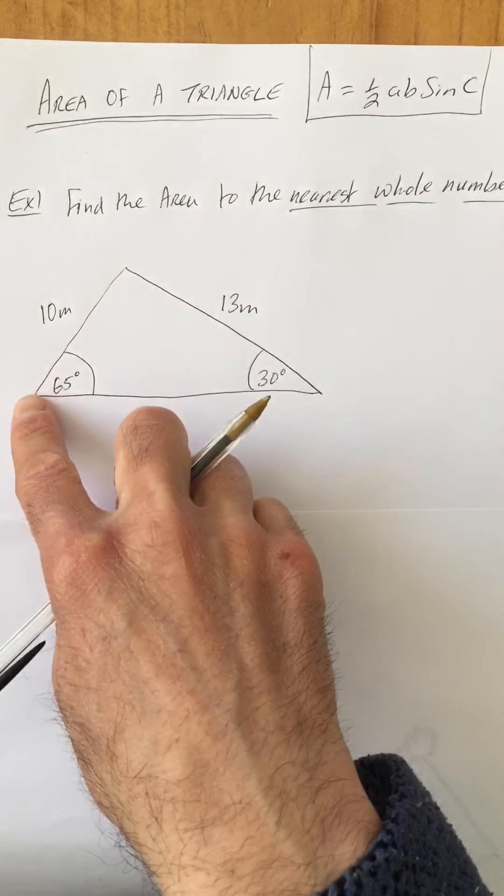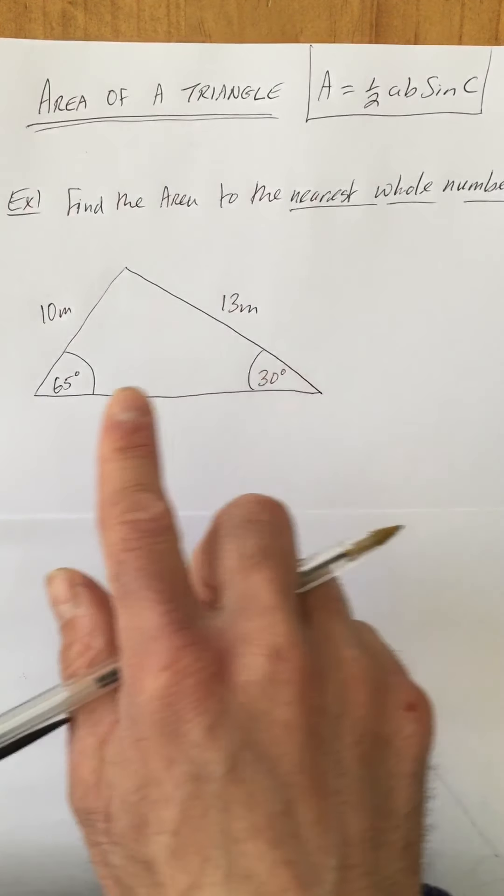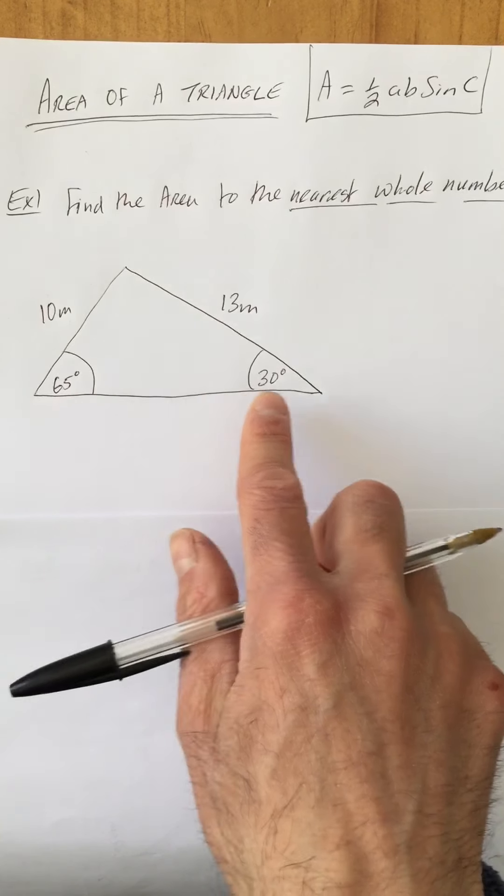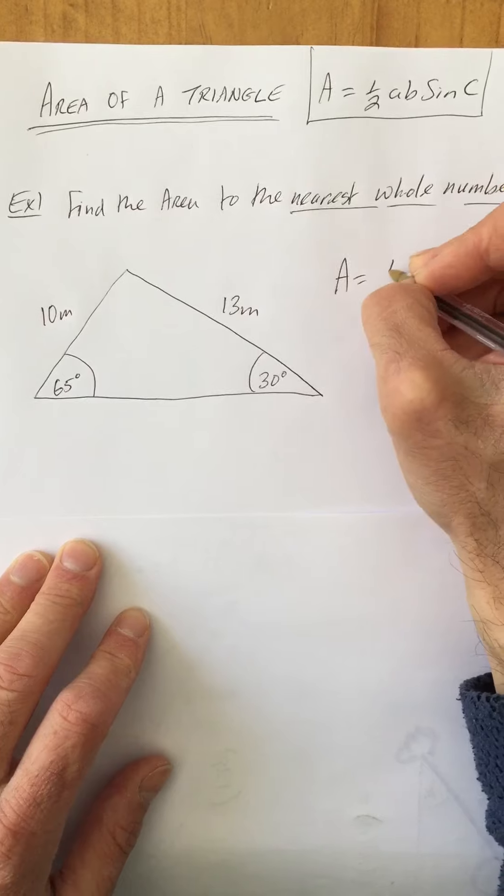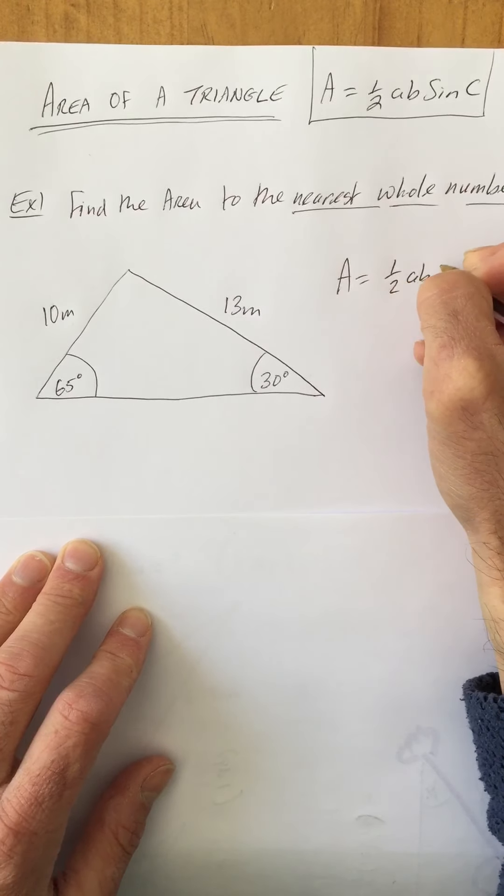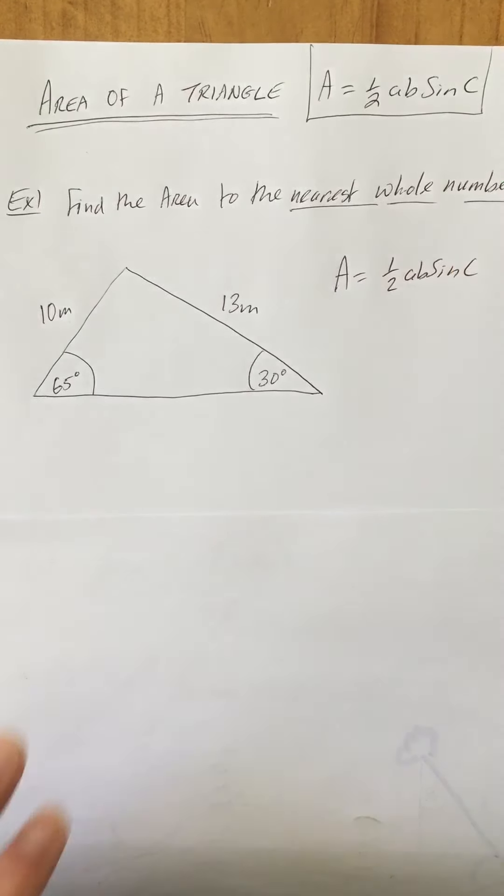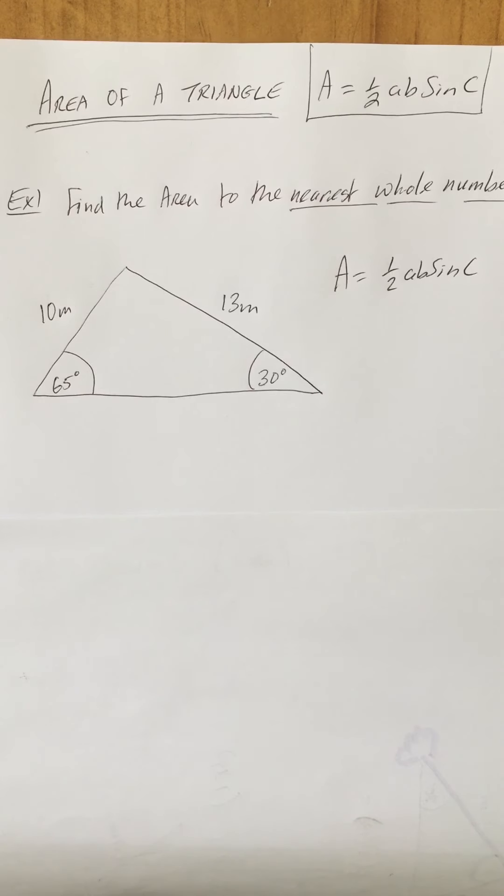Here is a triangle: 10 meters long, 13 meters long, 65 degrees here, 30 degrees here. To use our formula area equals a half ab sine C, we need two arms called A and B, and in this diagram you can see...